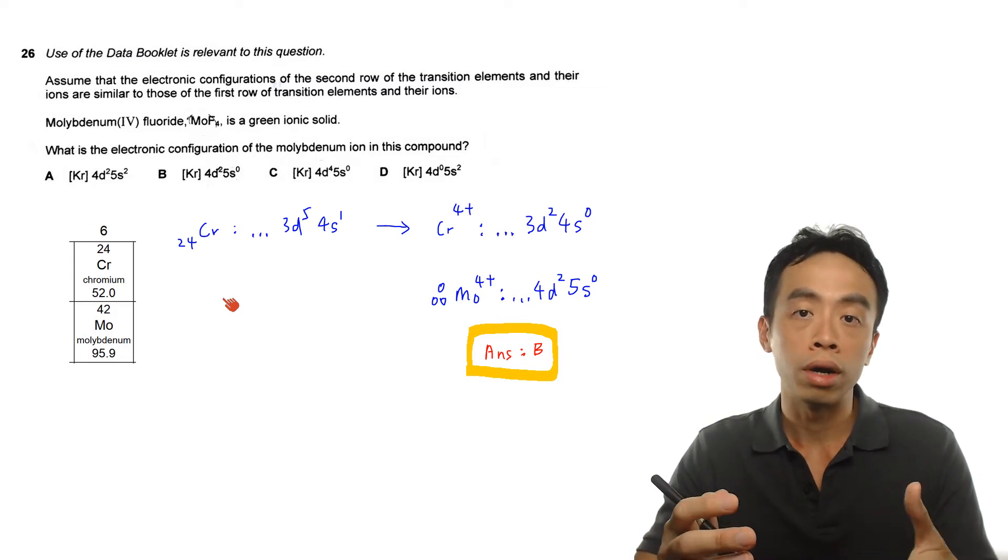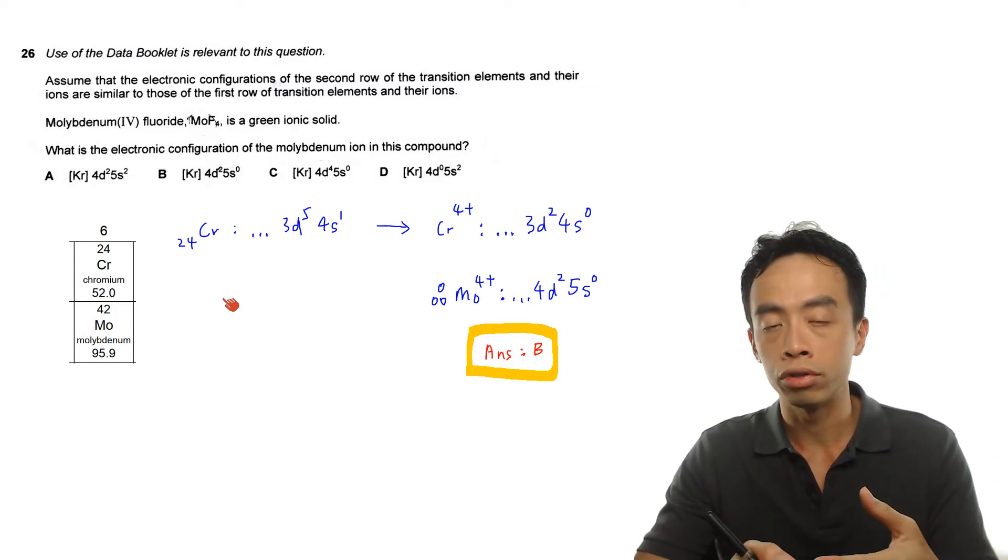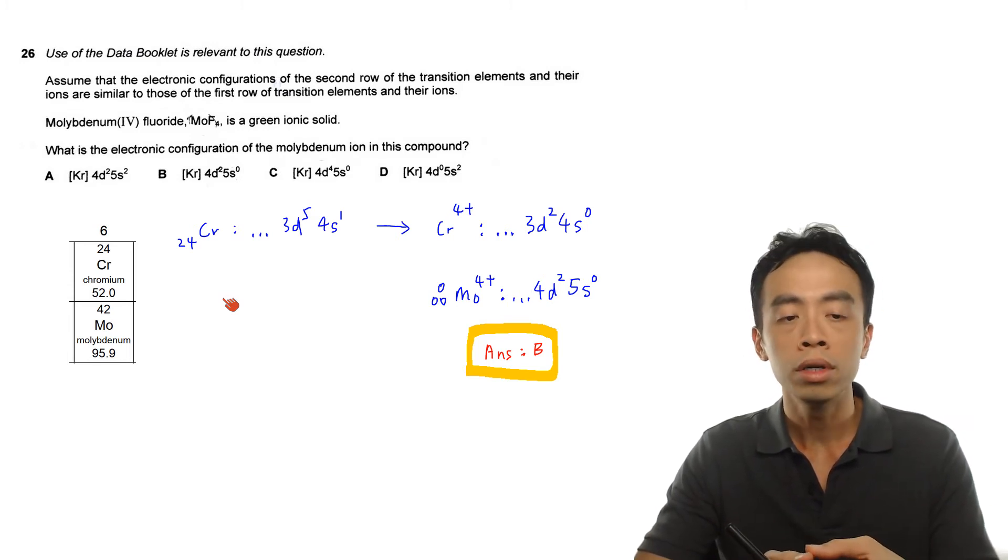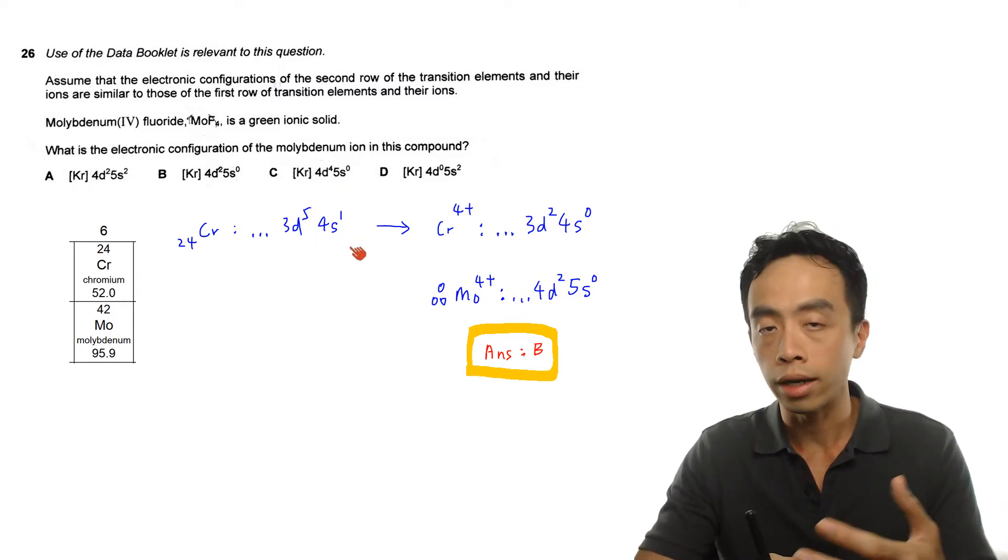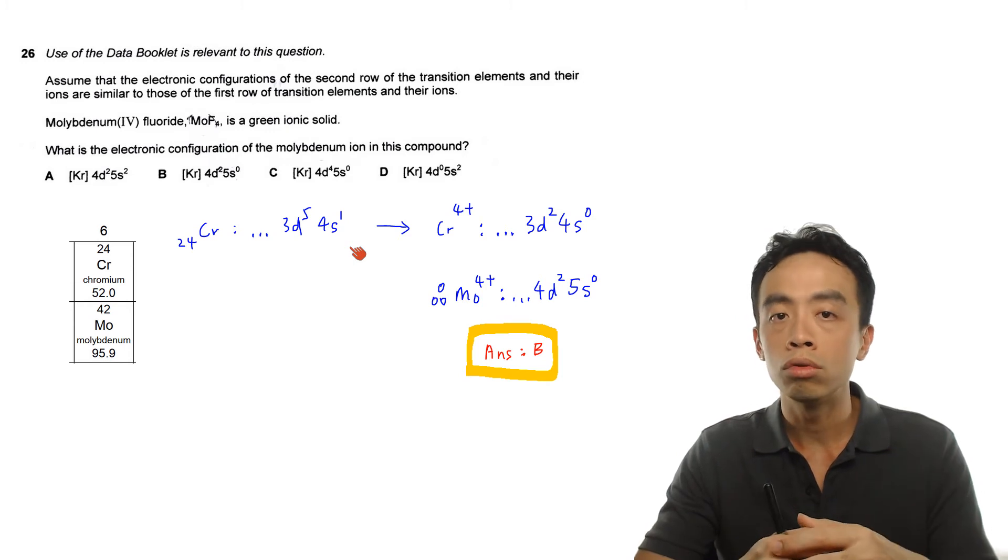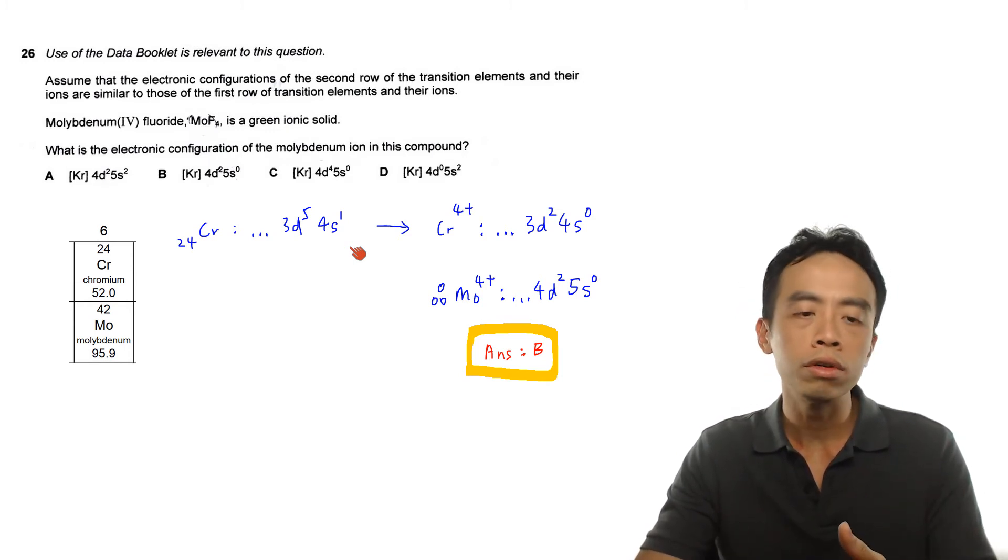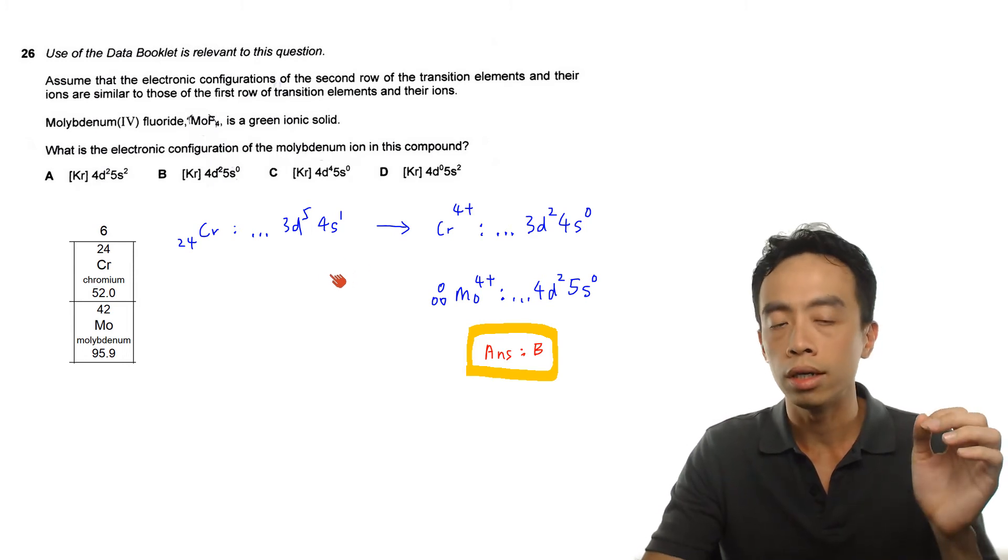The next thing we have to do is: how do I write out the electronic configuration for chromium 4+? We have to start with chromium atom. We are assuming that you are familiar with writing out the electronic configuration for atoms and ions. We won't go through in detail,